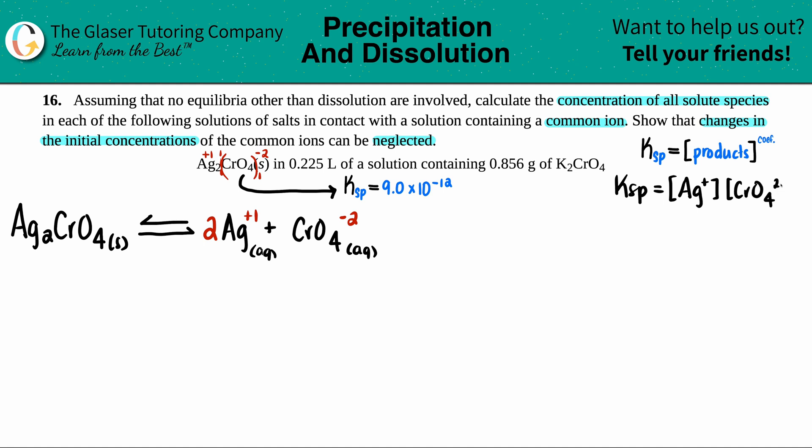Ksp equals the two products: Ag plus times CrO4 two minus. Pay attention, we have to raise those to their coefficients. There was a two in front of the Ag and one in front of the chromate, so Ag is raised to the second power. The Ksp we found was 9.0 times 10 to the negative 12th, but I don't know the concentrations of Ag+ and CrO4 2-.